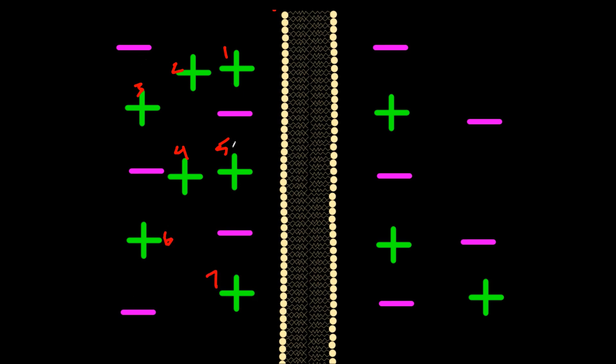If we pull a couple of charges from the intracellular fluid into the extracellular fluid, we now have 7 positive charges but only 5 negative charges outside — a plus 2 charge. On the inside, we have 5 negative charges but only 3 positive charges — a minus 2 charge. So if we're measuring the potential, this gives us a negative value, most likely expressed in millivolts, because we have an excess of 4 more negative charges on the inside than the outside.